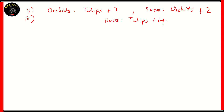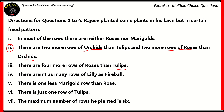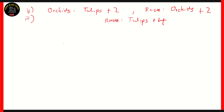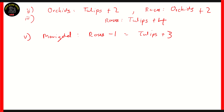If you look at clue number four, it says there aren't as many rows of lily as fireball, so the number of rows of lily will always be less than the number of rows of fireball. Next, clue number five says there's one less marigold row than rose. So the number of marigold rows is the number of rows of roses minus one, which is equal to tulips plus three, because the number of rows of roses are the number of rows of tulips plus four. So if marigold has one less row than roses, its number with respect to tulips would be tulips plus three.